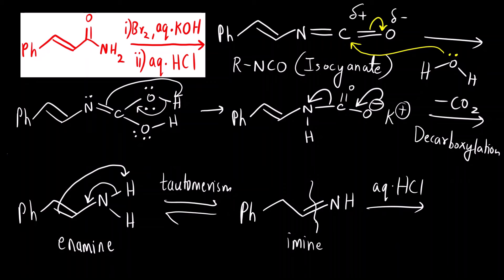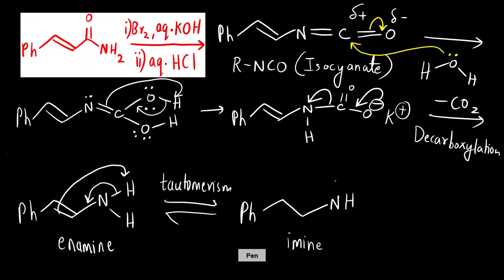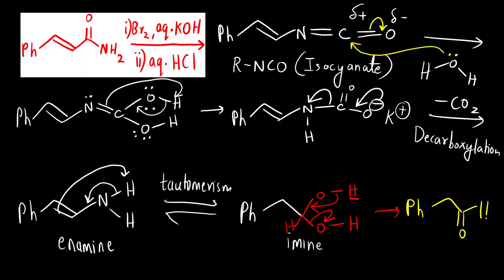The last step is aqueous HCl — hydrolysis. The C=N bond breaks; nitrogen is more electronegative so it gets hydrogen, and OH is added to carbon. One π bond breaks, giving H to nitrogen and OH on carbon. An ammonia molecule is lost. Two OH groups on the same carbon are unstable, so water is lost. The final product is Ph-CH₂-C(=O)-OH.